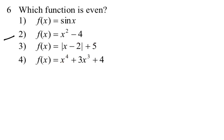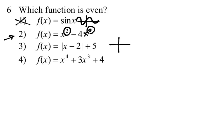Number six: which function is even? Choice 2 is the answer because all exponents are even — even the constant negative 4 has x to the 0 power, and 0 is even. If you sketch choice 1 it's symmetrical about the origin, so it's odd. Choice 3 involves shifting right 2 and up 5, so it's not symmetrical about the y-axis. Choice 4 has exponents of 4 and 3 mixed, so it's not a purely even function. Only choice 2 is possible.